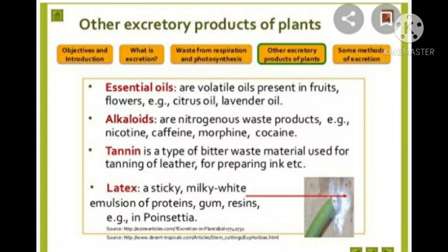Caffeine and nimbine are other common alkaloids used as CNS stimulants and antiseptic drugs. Another type of secondary metabolite is tannins. Tannins are a type of bitter waste material used for tanning of leather and for preparing ink.